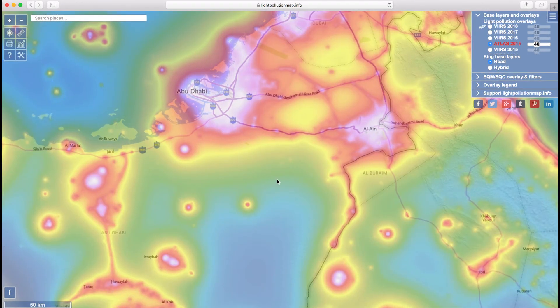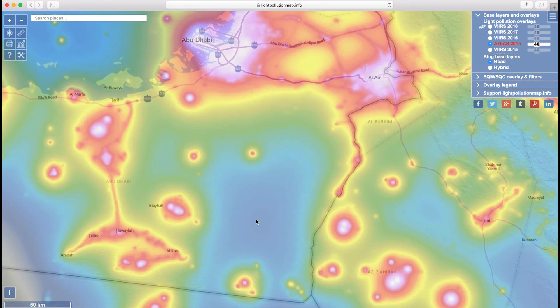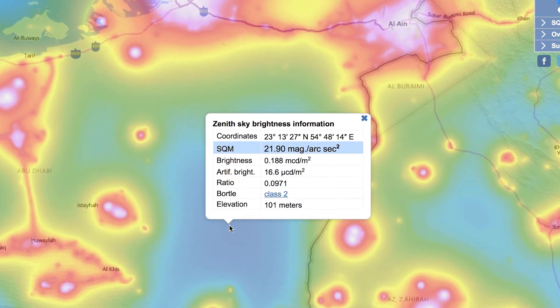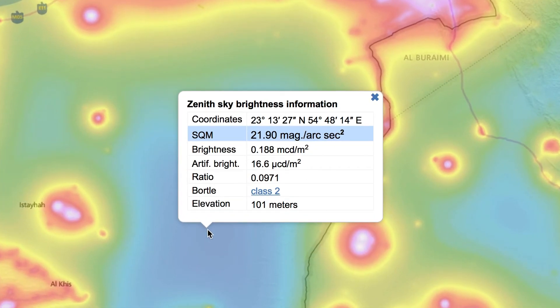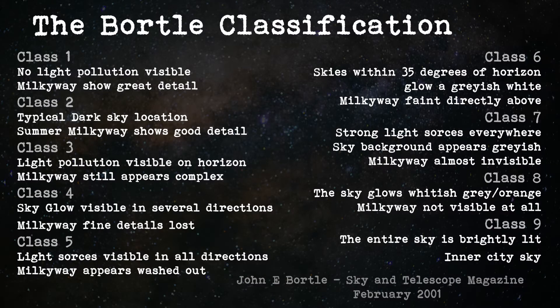These colours basically represent differing levels of visibility. If you click anywhere on the map, you'll get a whole load of data appearing. The only thing I look at is the Bortle figure. The Bortle scale is a nine-level numeric scale that measures the night sky's brightness of a particular location. John E. Bortle created the scale and published it in the February 2001 edition of Sky and Telescope magazine.